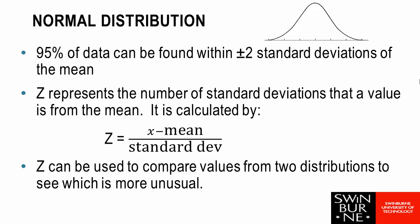When we're describing data from a normal distribution, one of our key figures is called Z. Z represents the number of standard deviations that a value is from the mean. To calculate this, we take our value of interest, we subtract the mean, and then we divide by the standard deviation.